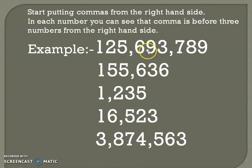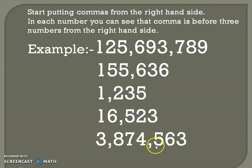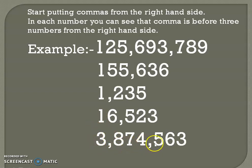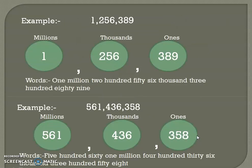Again, this number is having three periods — as these numbers also had three periods. Two commas means three periods. So: three million, eight hundred seventy-four thousand, five hundred sixty-three. Now let's see another method.